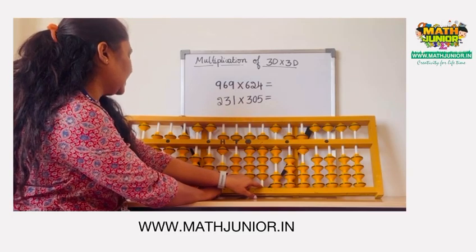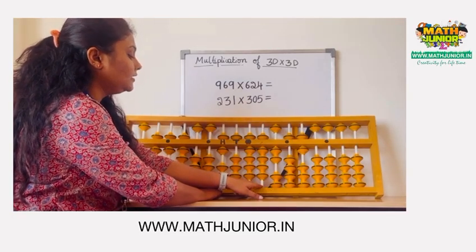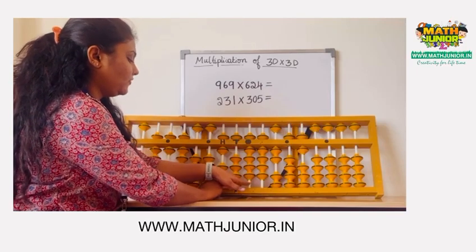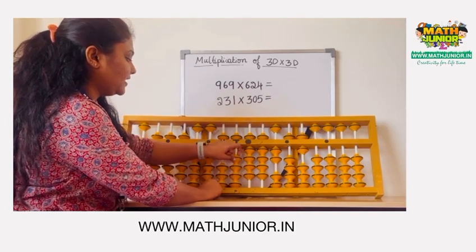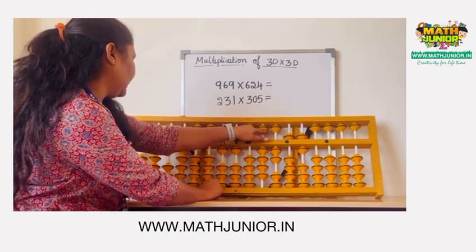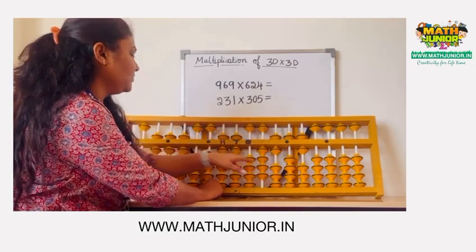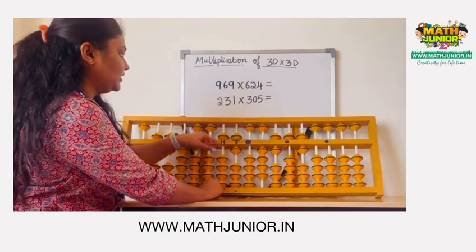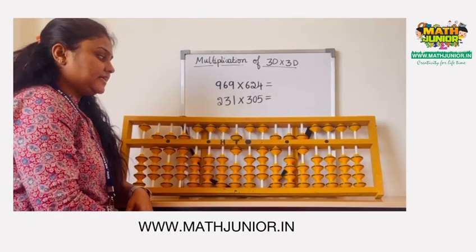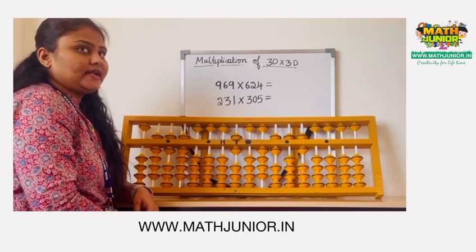Next is 6 times 9 is 54. I want to place 50 here, so plus 100 and minus 50. For plus 100, plus 1000, minus 900 and minus 50. And 4 is plus 5 and minus 1. Then we will remove 6. So the final answer is 604,656.